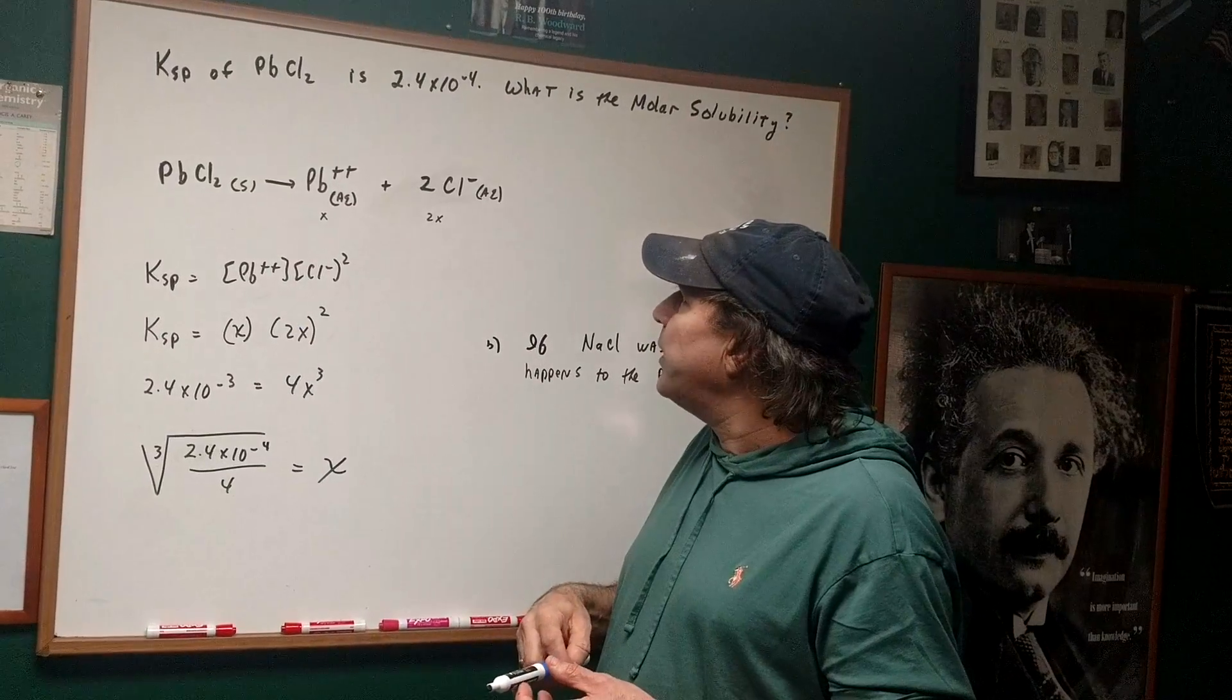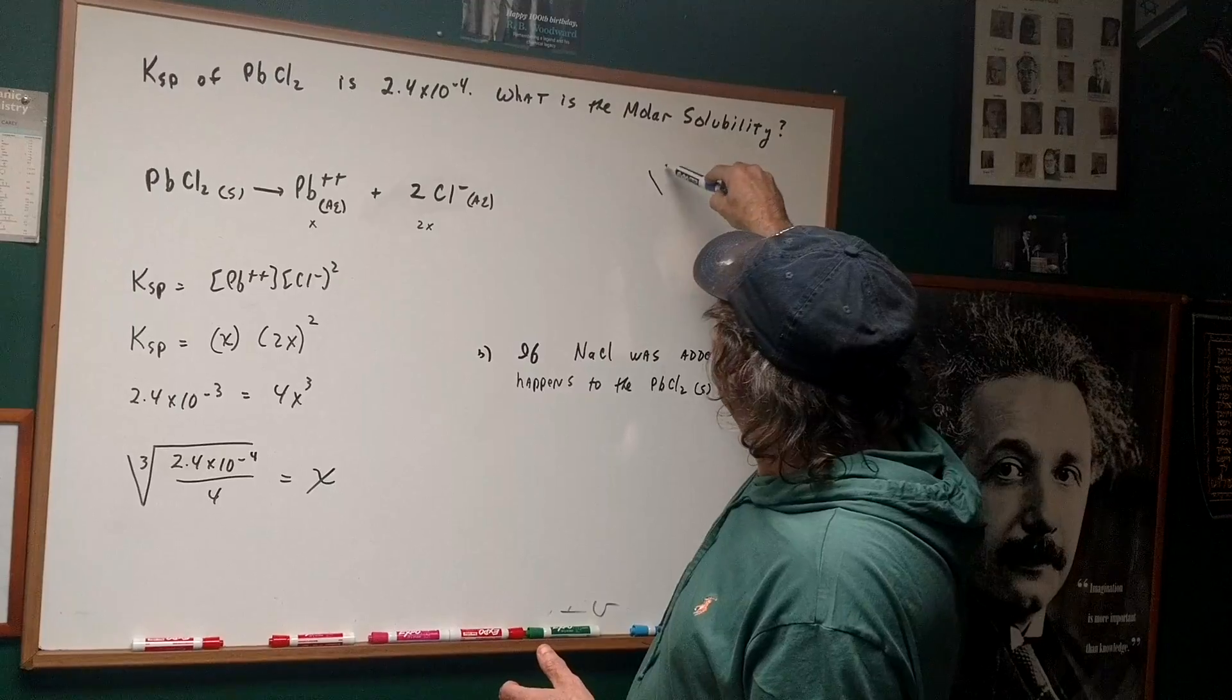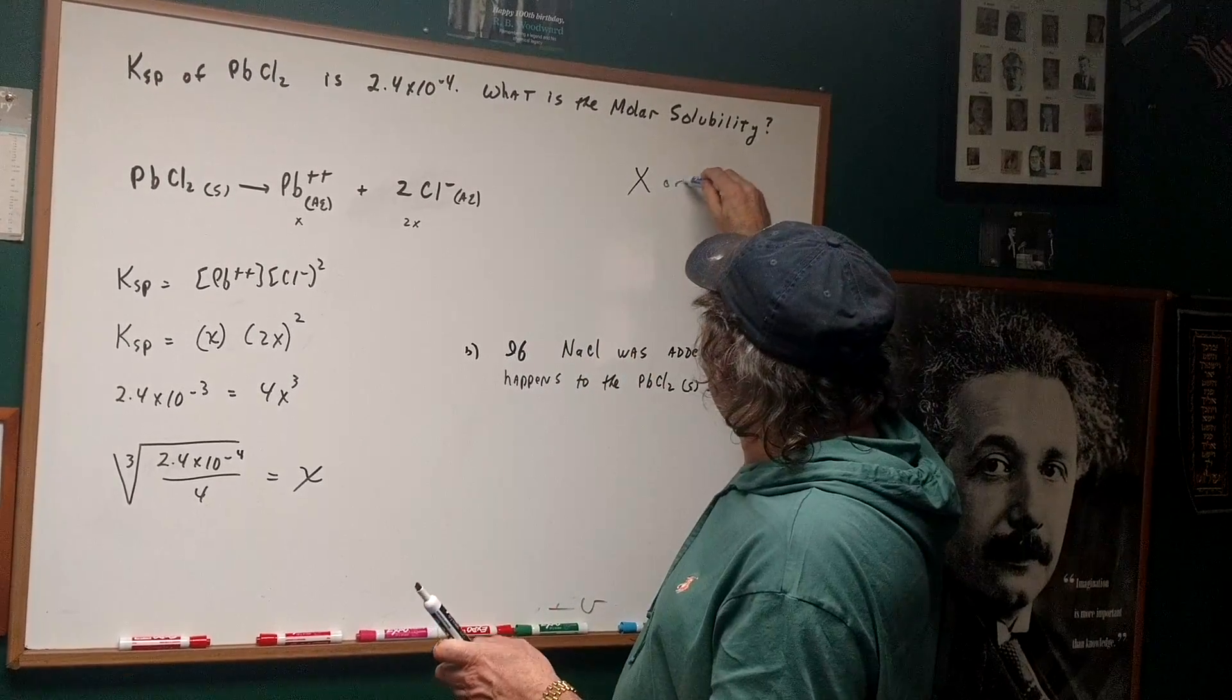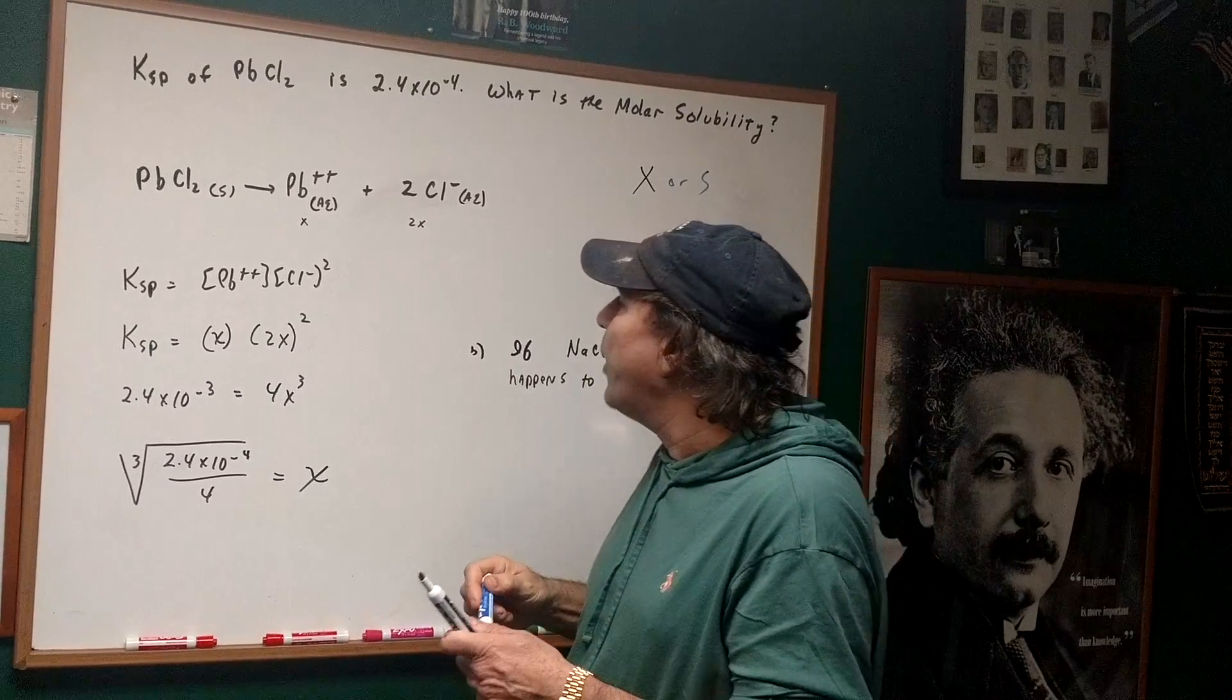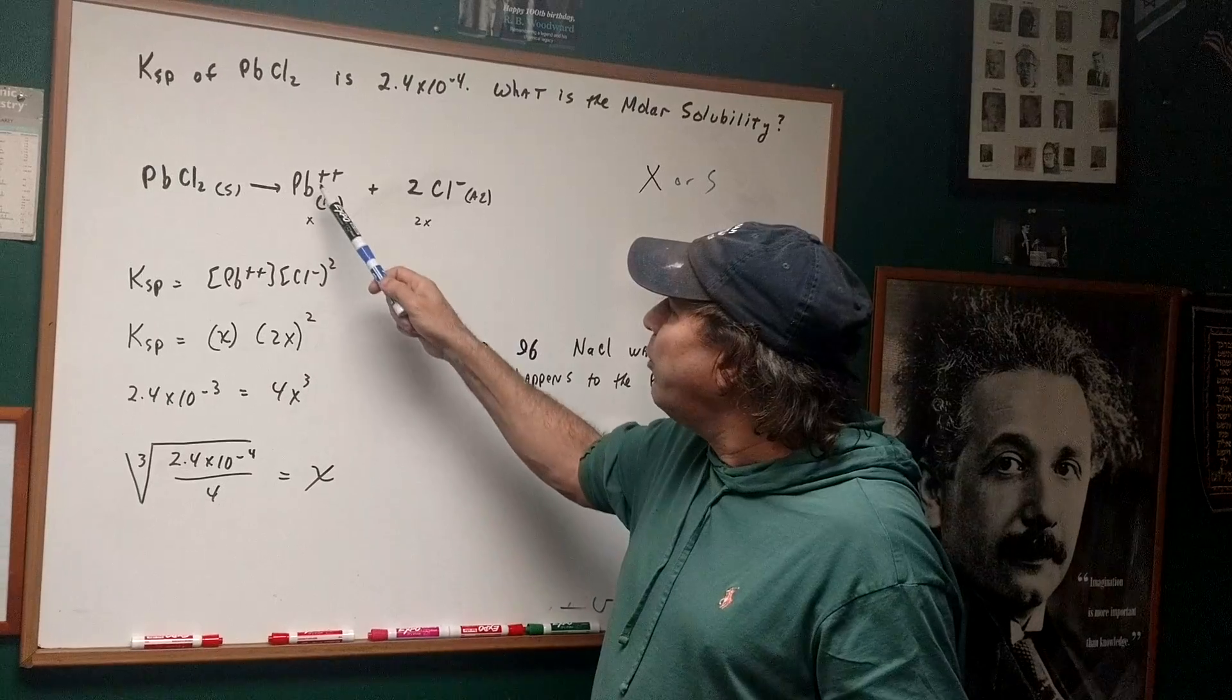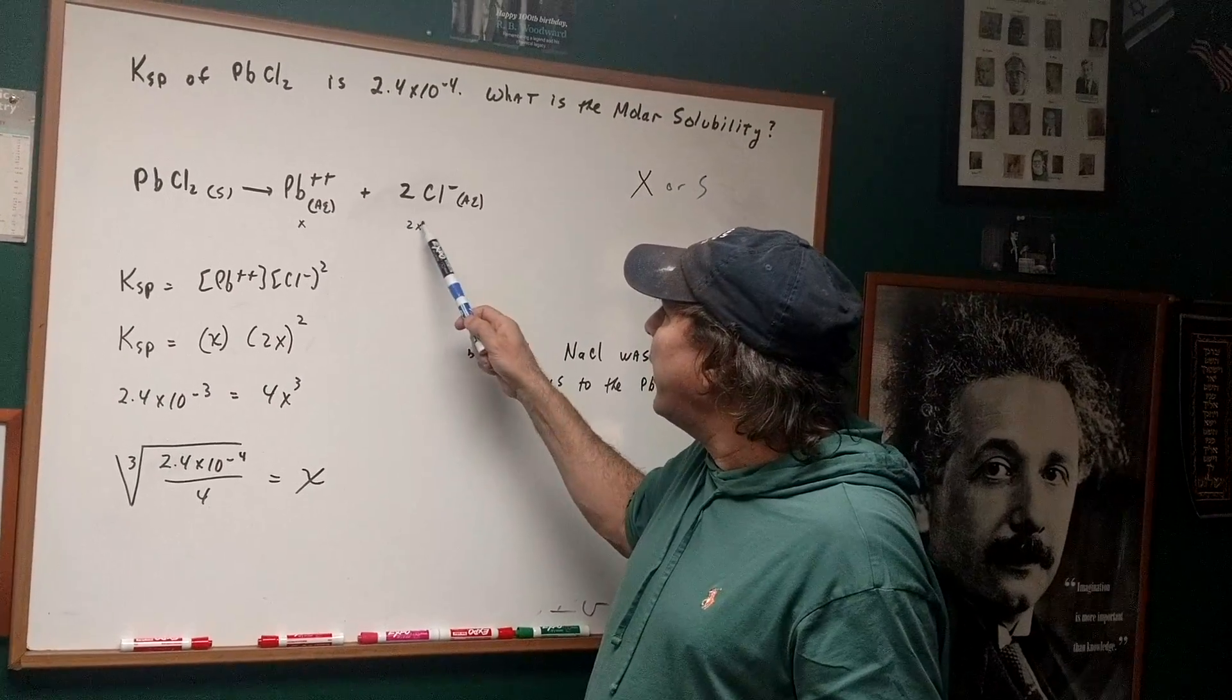Once you write the KSP expression, whenever you see what is the molar solubility, that's the x term. Molar solubility is x. Some people call it s. What I do is I notice that this is a one to two ratio, so I'm going to call the Pb x, and I'm going to call the chloride ion 2x.